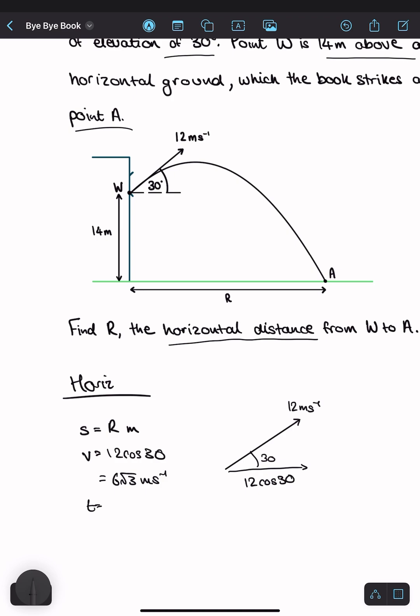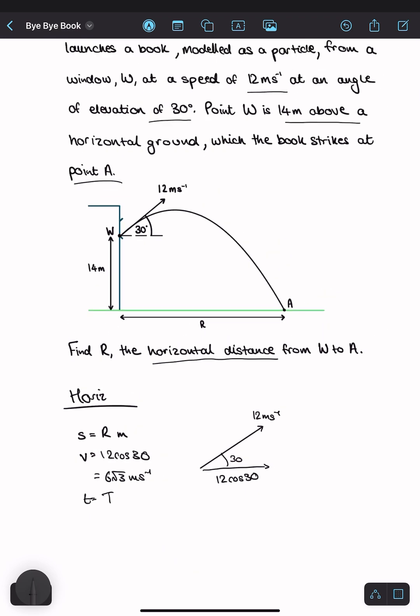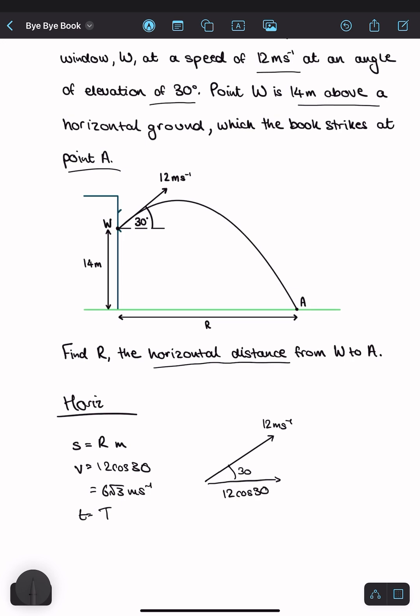And the time, they haven't given us the time, so we need to calculate that too. Let's call that t seconds. We don't know what the time is and we want to find the distance. Since you have vertical and horizontal motion, the time taken for each is the same because it's the same amount of time in air. So now let's do our vertical working.